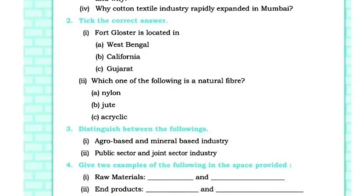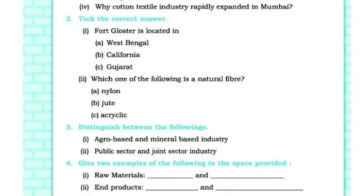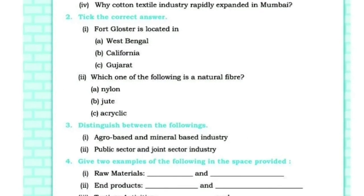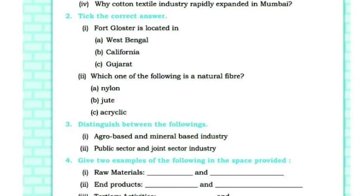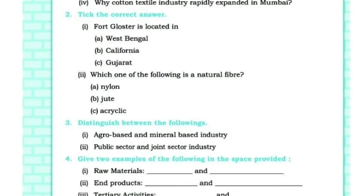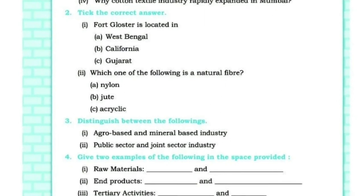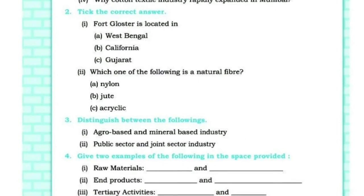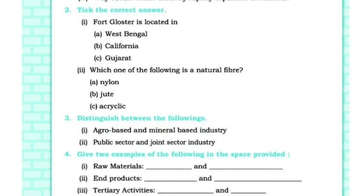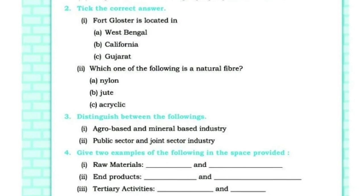Distinguish between public sector and joint sector industry: Public sector is owned and operated by the government. Joint sector industry is owned and operated jointly by the government and individuals or a group of individuals. Examples of public sector industry include Hindustan Aeronautics and Steel Authority of India.